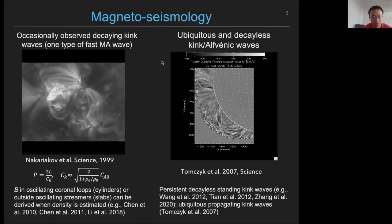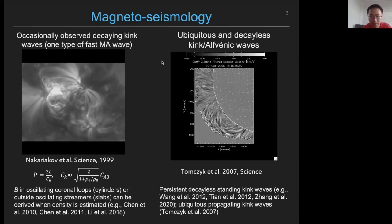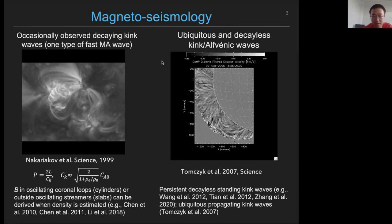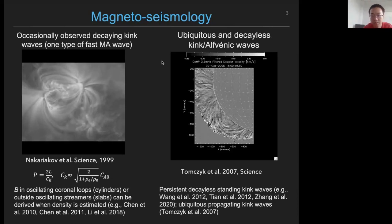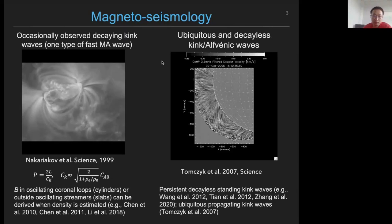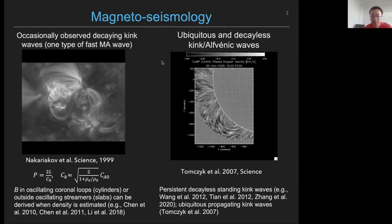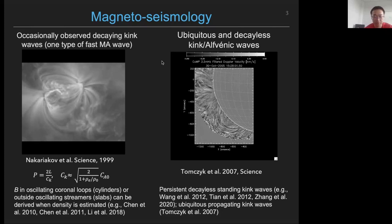So here, we use the ubiquitous propagating kink waves observed by CoMP instrument, like the one shown in the right movie. This is the waves we used for our measurement for the coronal magnetic field.